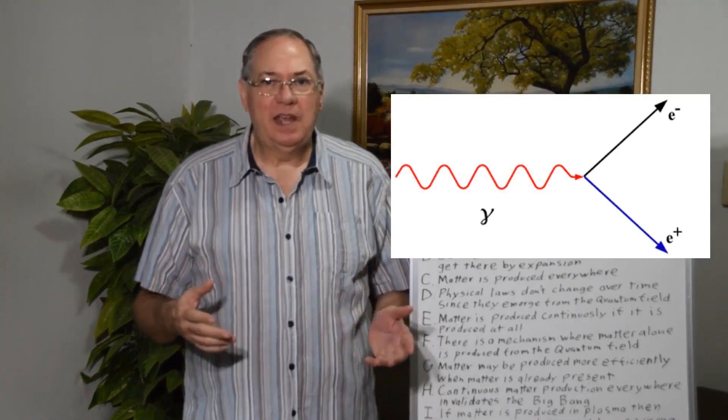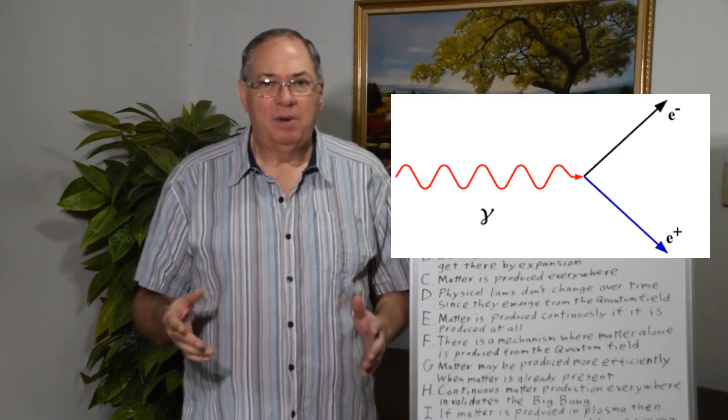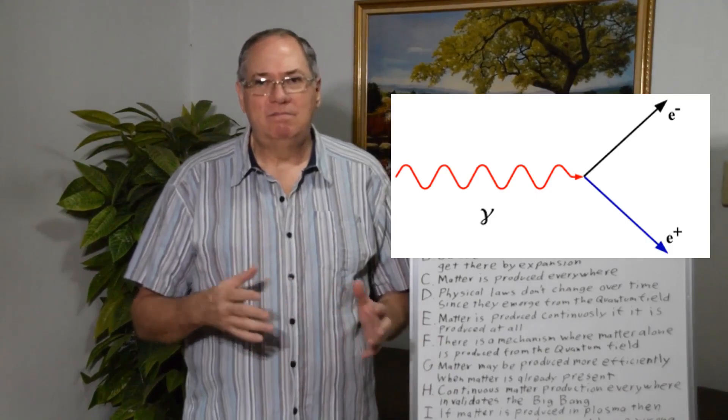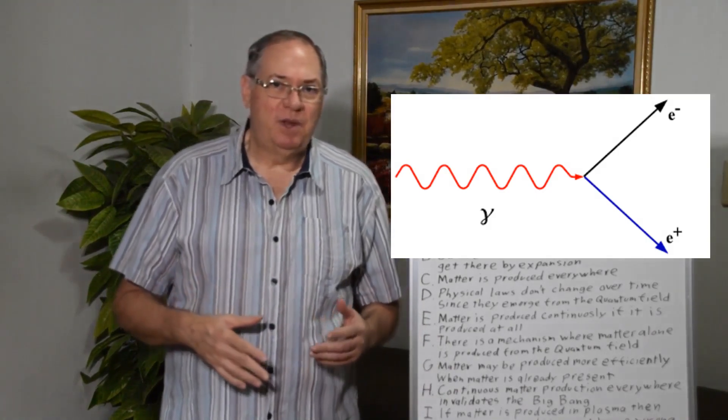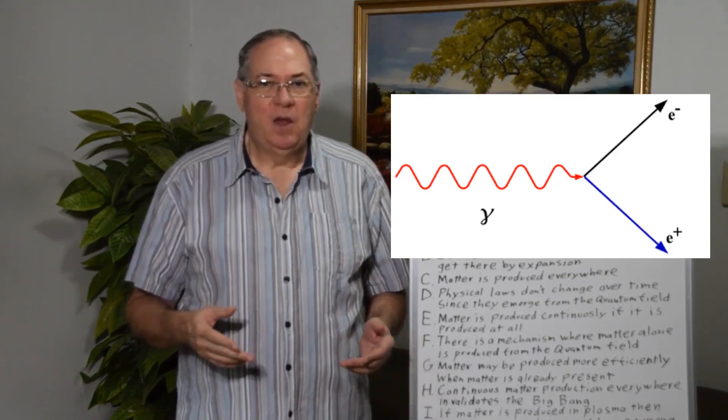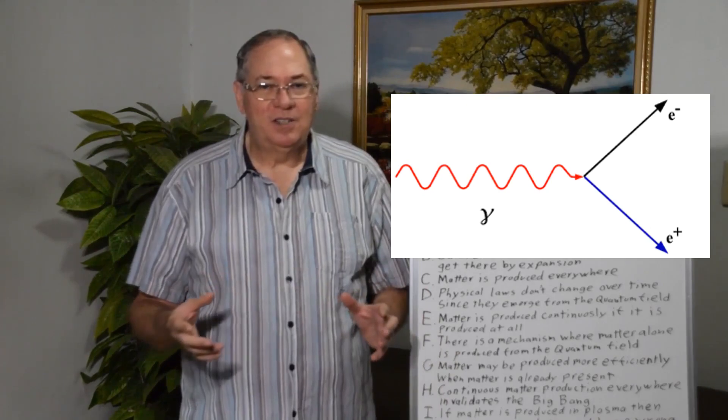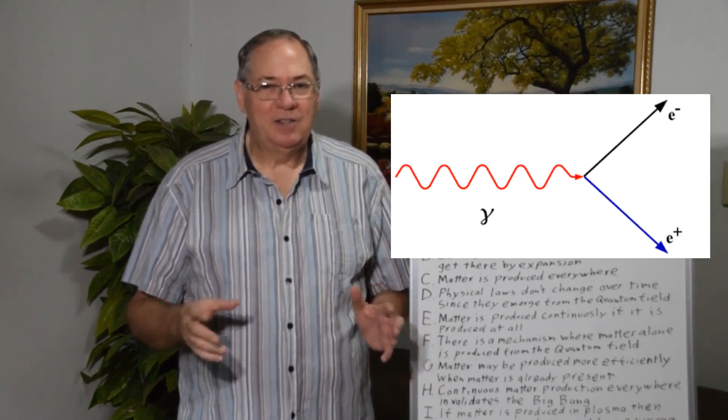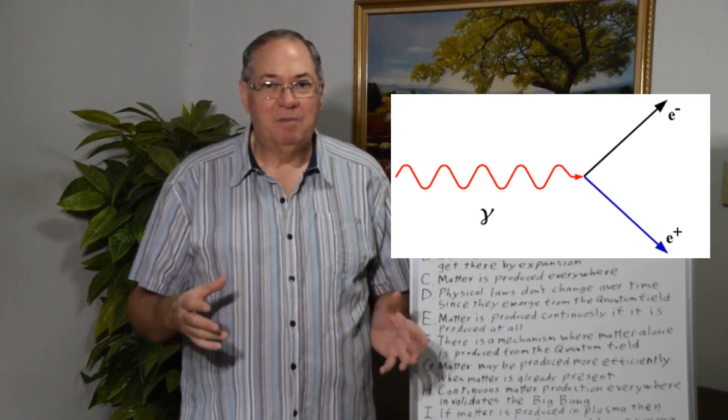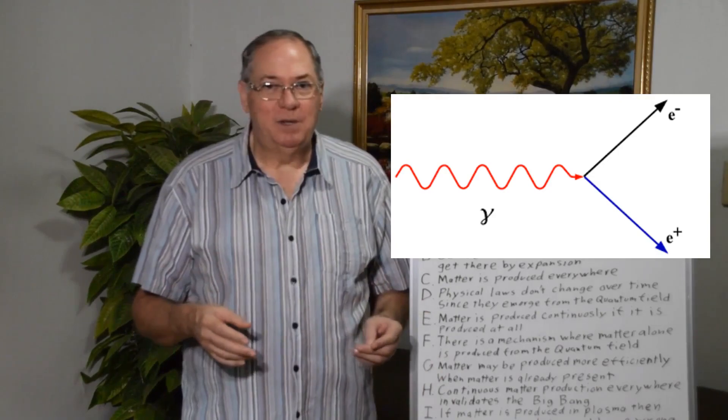Some people will say that we know how matter and antimatter are produced together and the antimatter just somehow disappears, or maybe there are stars that are matter and stars that are antimatter and as long as they don't come together, we're fine and we'll see big matter-antimatter explosions if that were to happen.